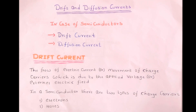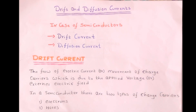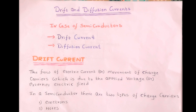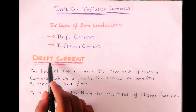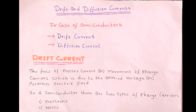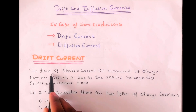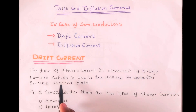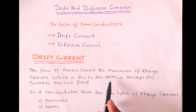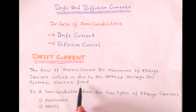Before understanding this drift current concept, we should first understand what drift means. Drift is the slow movement of an object towards something. And in the case of drift current, it is the flow of electric current or movement of charge carriers, which is due to an applied external electric field.